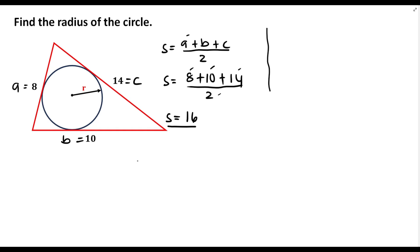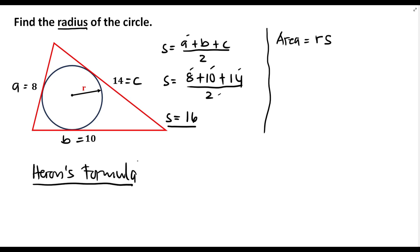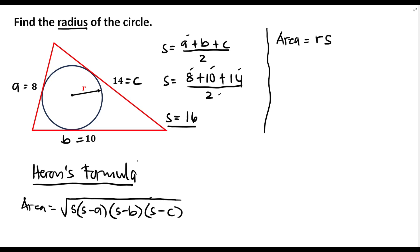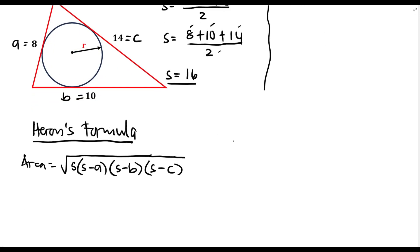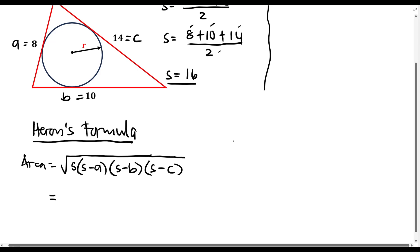Now we can find the area of the triangle. The area formula relates the radius times the semi-perimeter, but since we're looking for the radius, we first need to find the area using Heron's formula: the area equals the square root of the semi-perimeter times (semi-perimeter minus A) times (semi-perimeter minus B) times (semi-perimeter minus C).